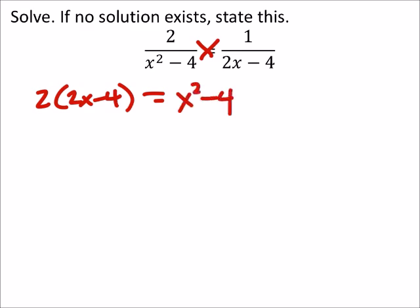From here I would distribute the two, so I'd have 4x minus 8, and this now equals x squared minus 4.